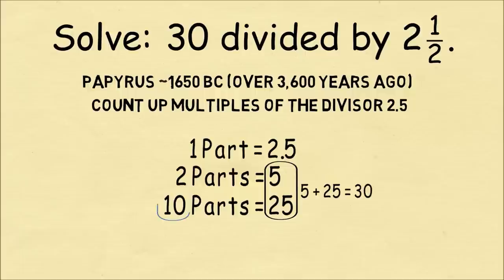And now to get our answer, our quotient, we just add up the parts. So we add up 2 parts and 10 parts, and we get 12. And that's our answer, 30 divided by 2 and a half is 12.